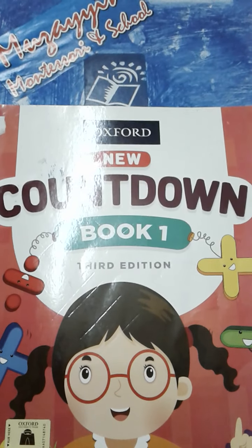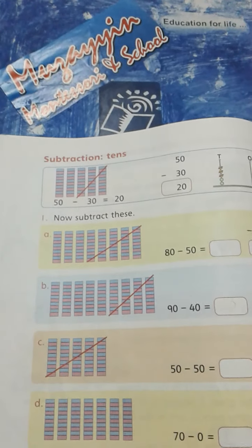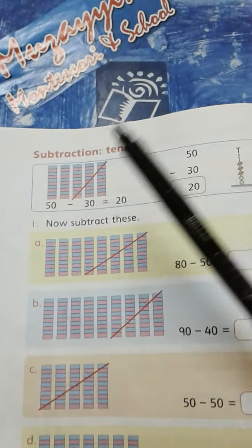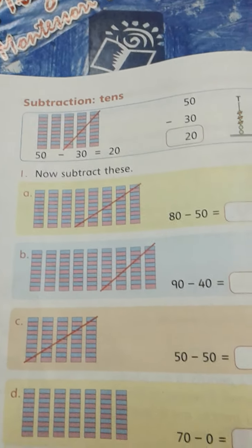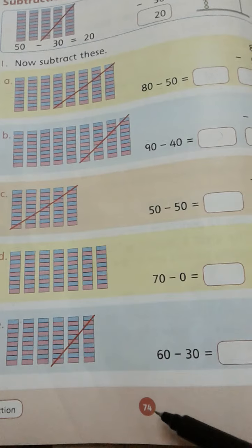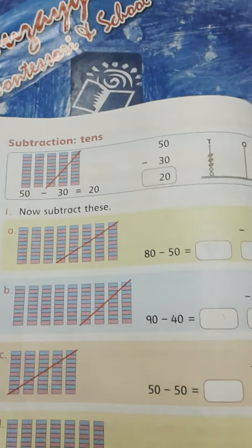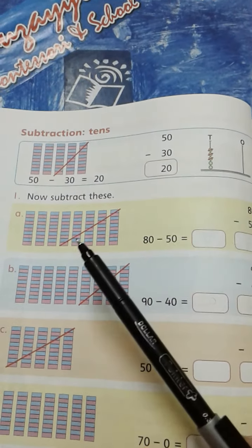Assalamu alaikum and welcome to our countdown's online class students. In today's countdown online class we will learn subtraction in tens, so kindly open page number 74 and write date and CW on the top. Here is an example, here we will solve this.